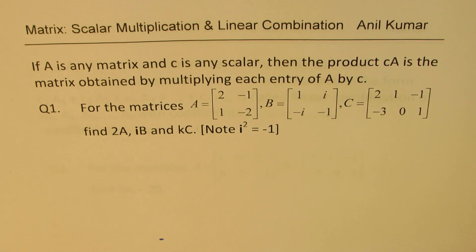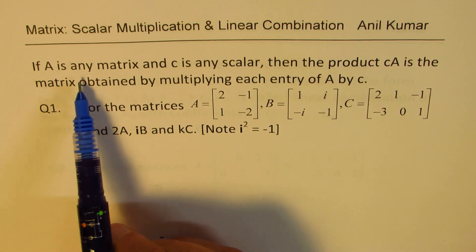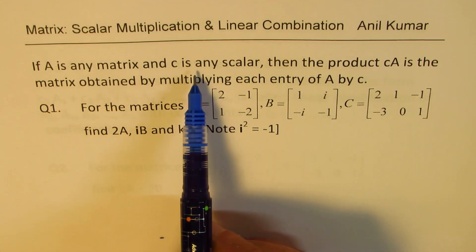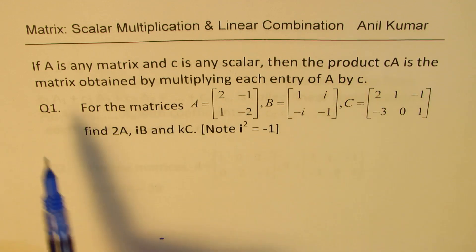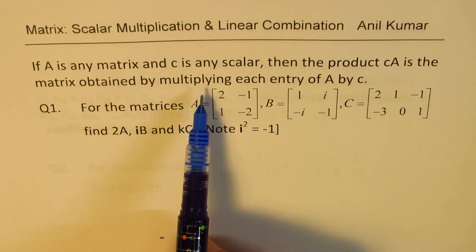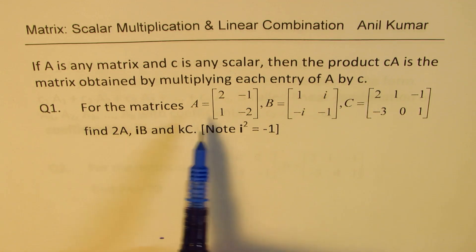Now let's begin with the concept. So we're saying if A is any matrix and C is any scalar then the product C times A is the matrix obtained by multiplying each entry of A by C. We'll take up an example to really explain all this.